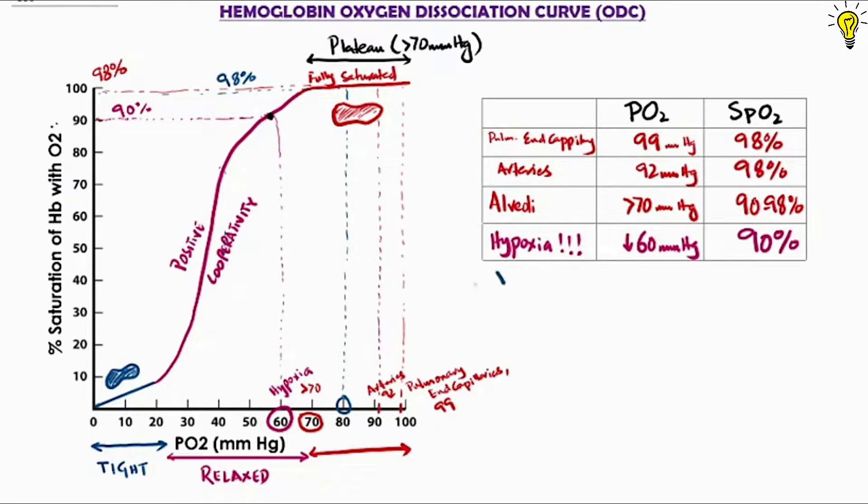Once oxygen is taken by tissues for use, the pressure of oxygen in veins falls to around 40 mmHg normally. And if we see on dissociation curve, at 40 mmHg pressure of oxygen, the saturation should be around 70 to 75%.